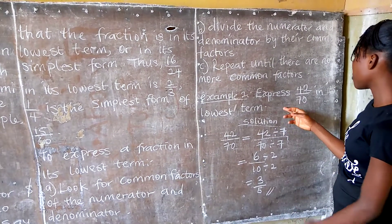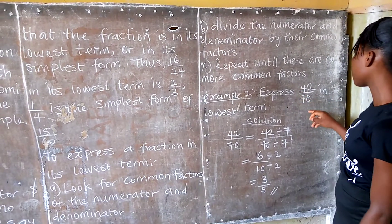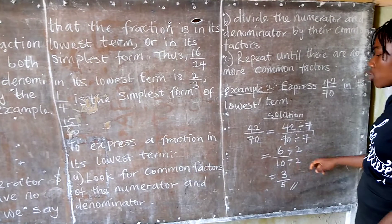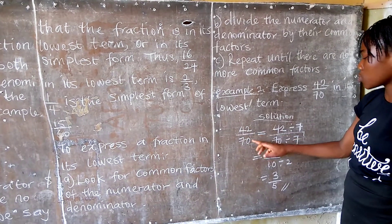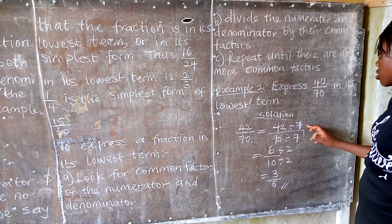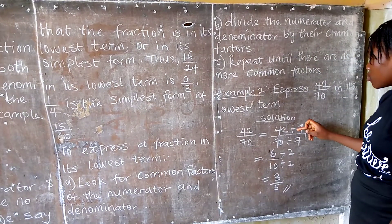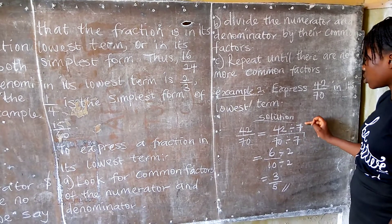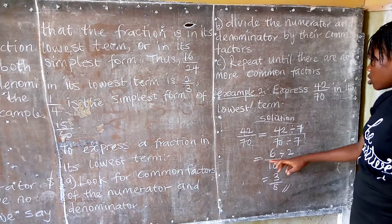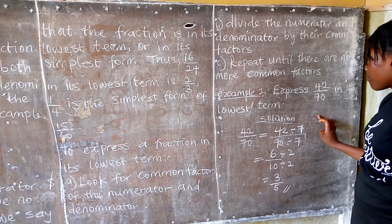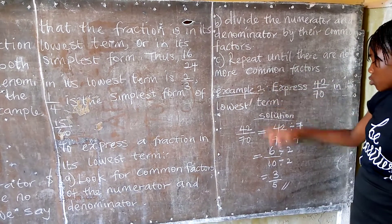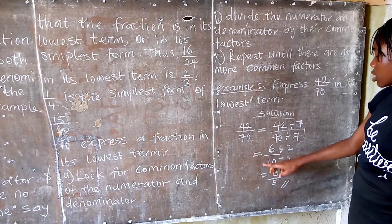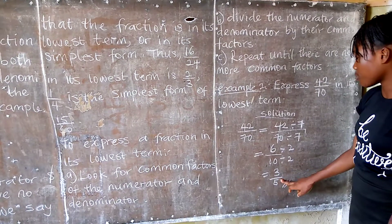Look at this example: Express 42 over 70 in its lowest terms. You look for the common factor of 42 and 70. The common factor is 7, so you divide both by 7 to get 6 over 10. Then repeat — another common factor of 6 and 10 is 2, so divide both by 2 to get 3 over 5.